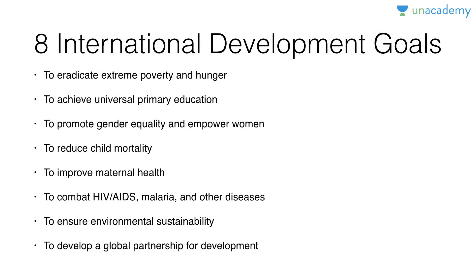So you know the rhyme: one is sun, two is shoe, three is tree, four is boar, five is hive, six is sticks, seven is heaven, eight is gate, nine is line, and ten is hen. We will utilize that here and learn the eight international development goals one by one.